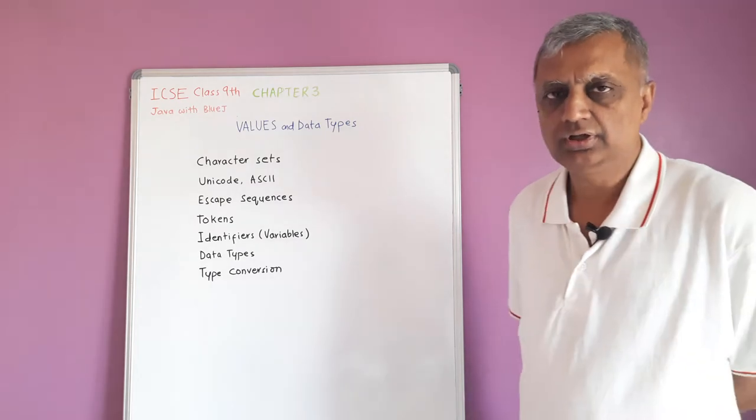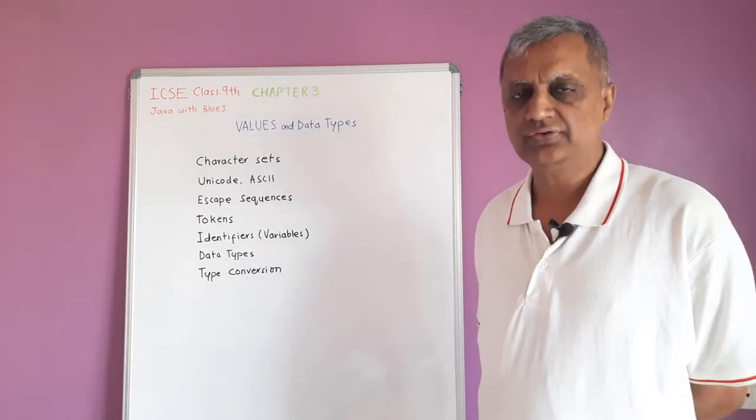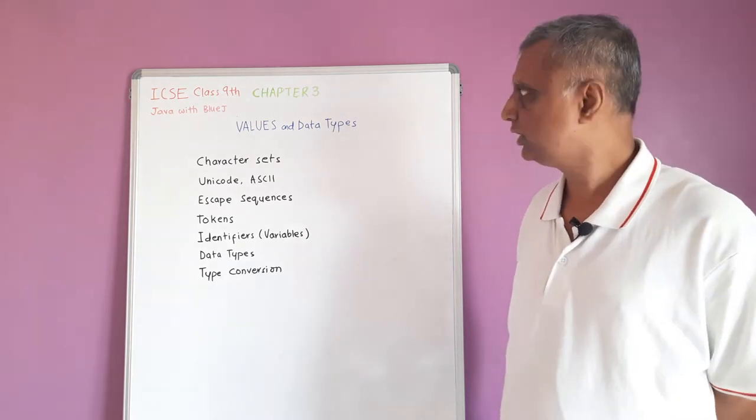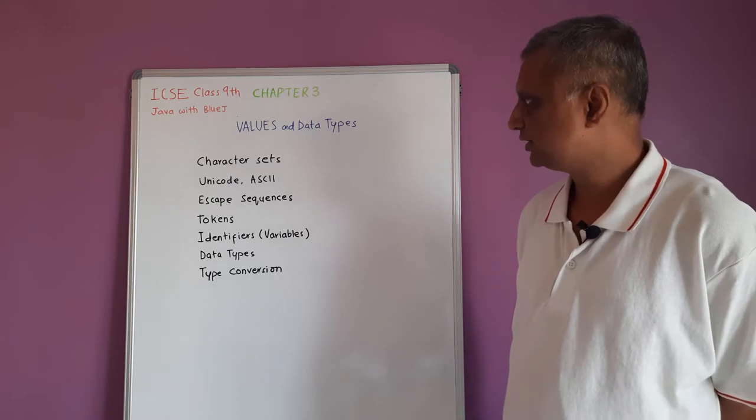Today, we are going to learn Java with BlueJ for ICSE class 9th. This is the third chapter called Values and Data Types.